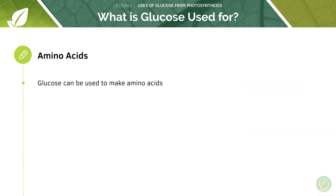Glucose can also be used to make amino acids. Remember, amino acids are the basic building blocks of cells because they join together to make proteins.